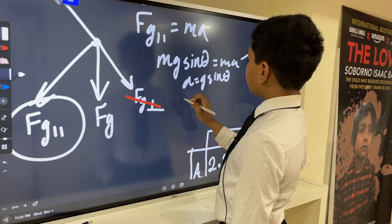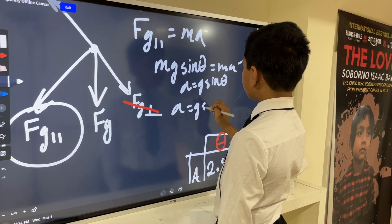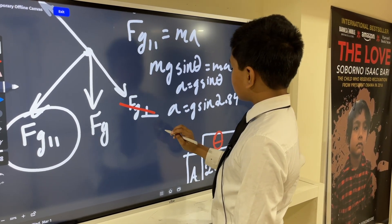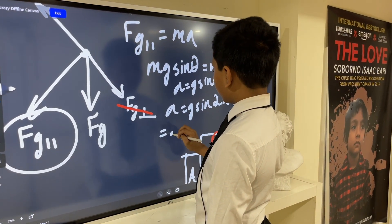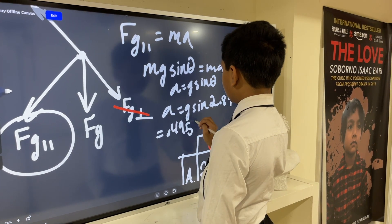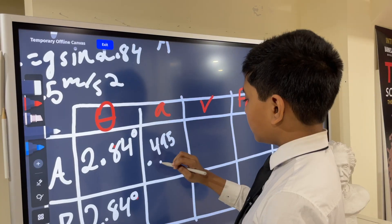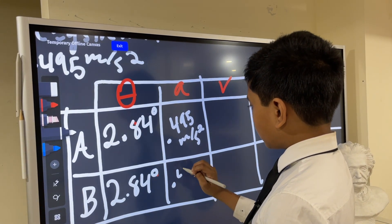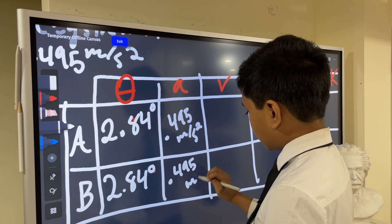Plugging in 2.84, we get the answer of A being 0.495 meters per second squared. 0.495 meters per second squared, and 0.495 meters per second squared.